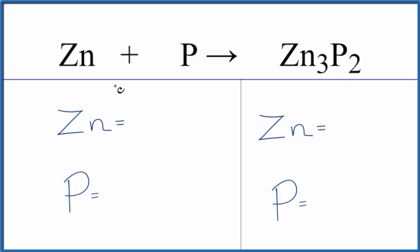Let's count the atoms up and balance the equation. We have one zinc, one phosphorus. On the product side, we have three zincs and two phosphorus atoms.